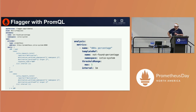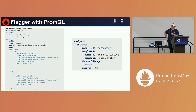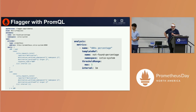The metric template object has a type and an address, and this is how you can have multiple different observability stacks running in parallel — you can use all of them to build a very complex mechanism for how you want to promote new versions in your cluster.